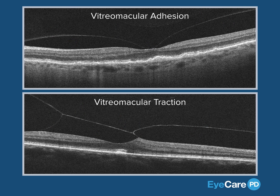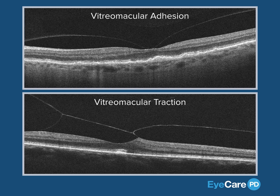So the concept is really a spectrum of adhesion and detachment of the posterior cortical vitreous, except when the retina itself is distorted from its normal configuration, we use the term vitreomacular traction. Got it? Good.